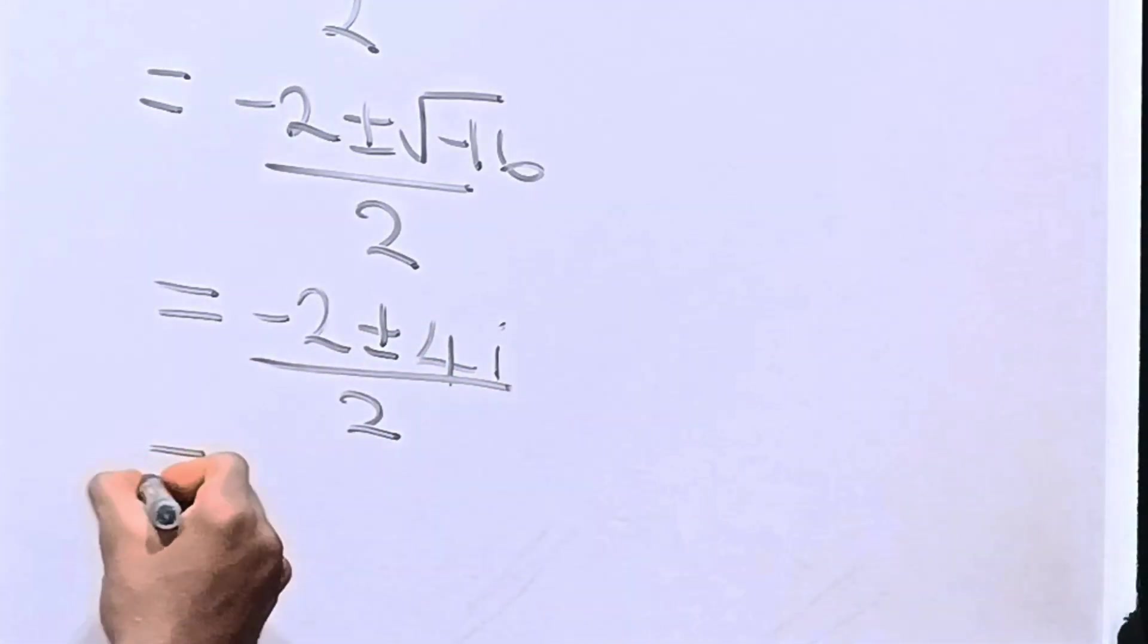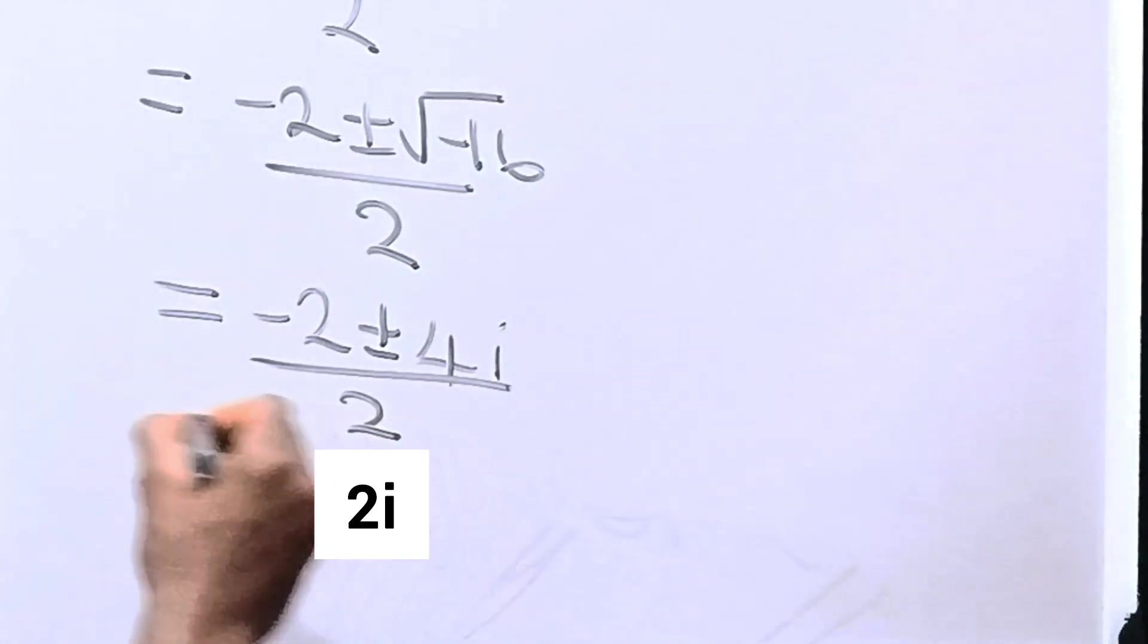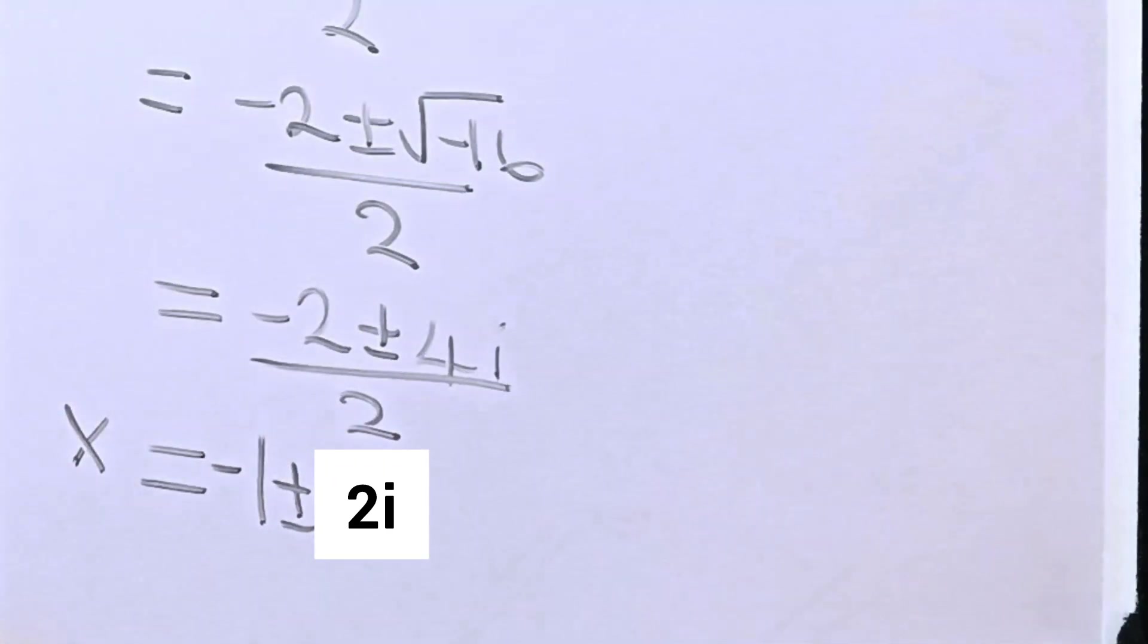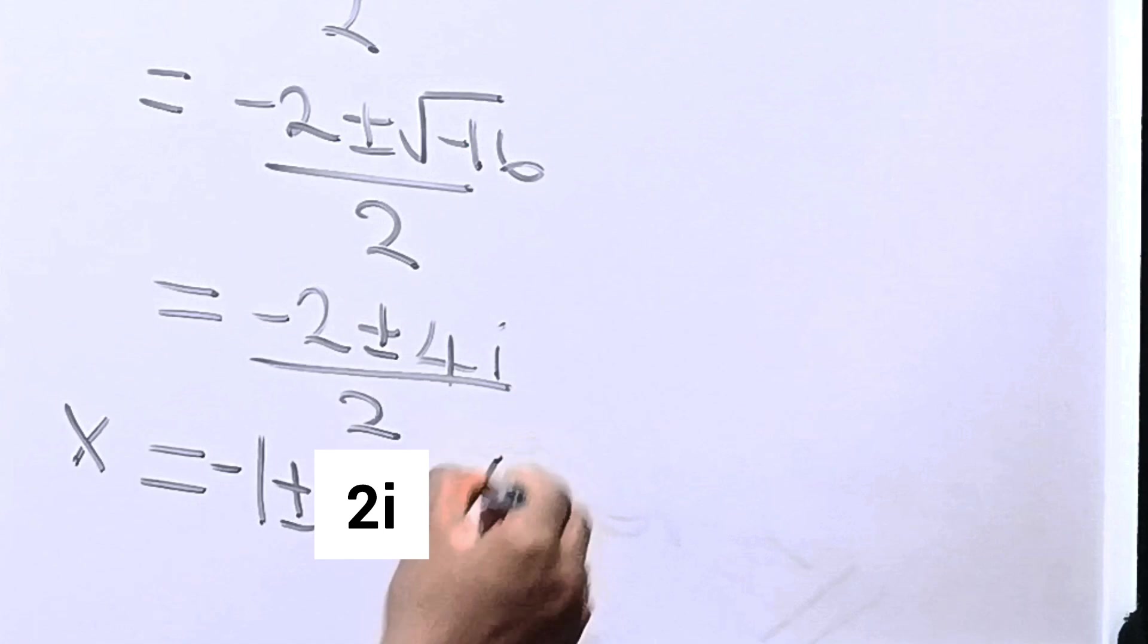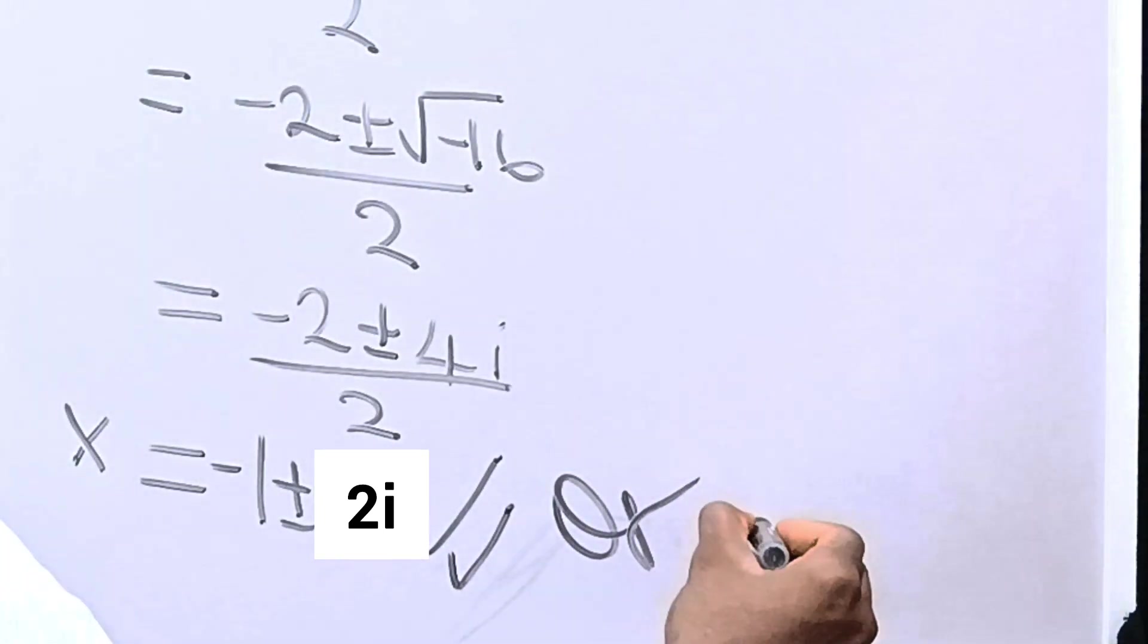Hence, this becomes equal to negative 1 plus or minus 2i, and it's equal to x. So this becomes the answer for x, or x is equal to 2.